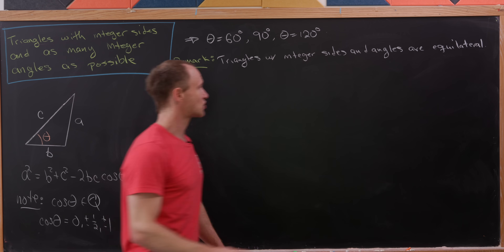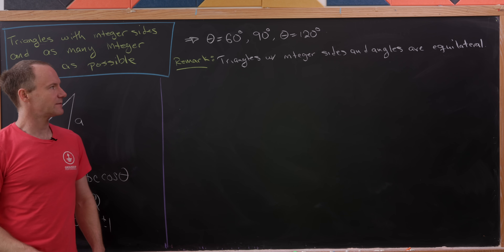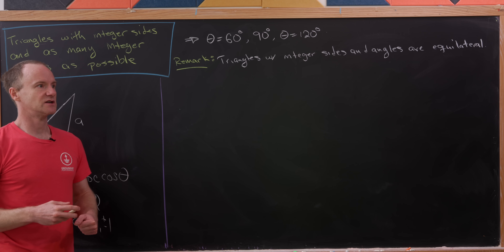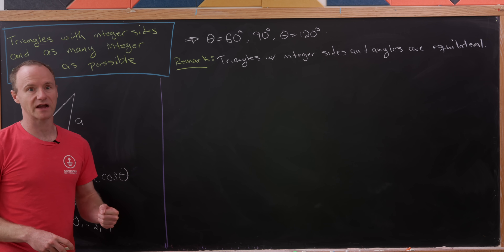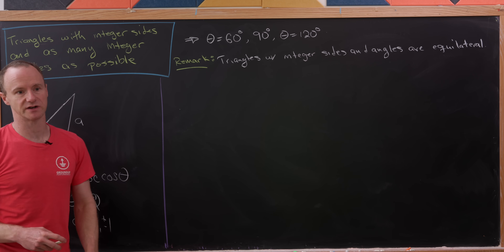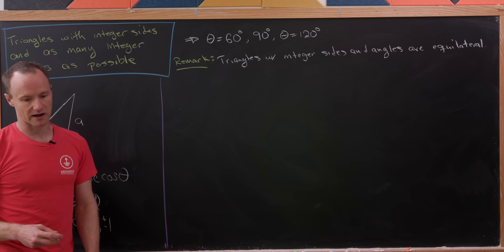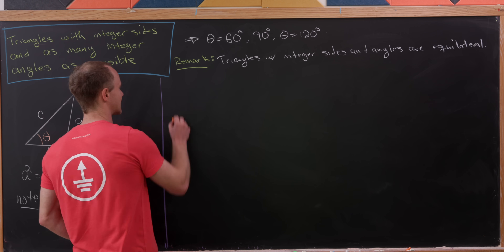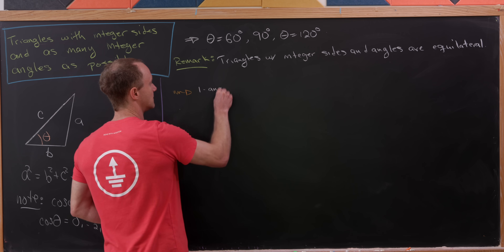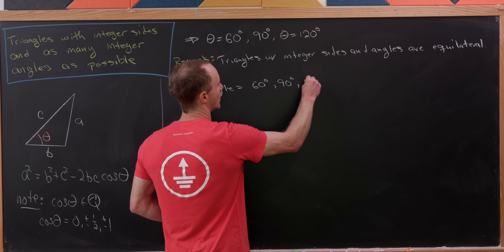Triangles with integer sides and integer angles in degrees are equilateral. So the interesting case is triangles where one angle is an integer number of degrees. If we have two integer-degree angles, we automatically have three, and that's 60-60-60, which is equilateral. So we're interested in triangles with one angle equal to 60, 90, or 120 degrees.